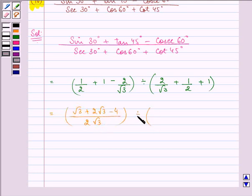Here also 2 root 3 will be our LCM. We have 4 plus root 3 plus 2 root 3.